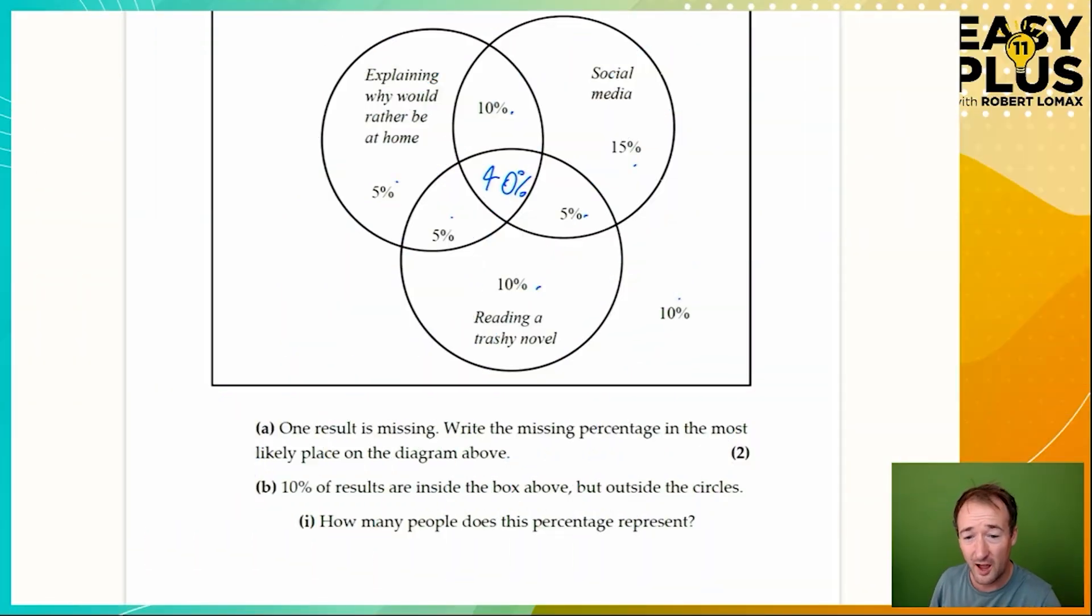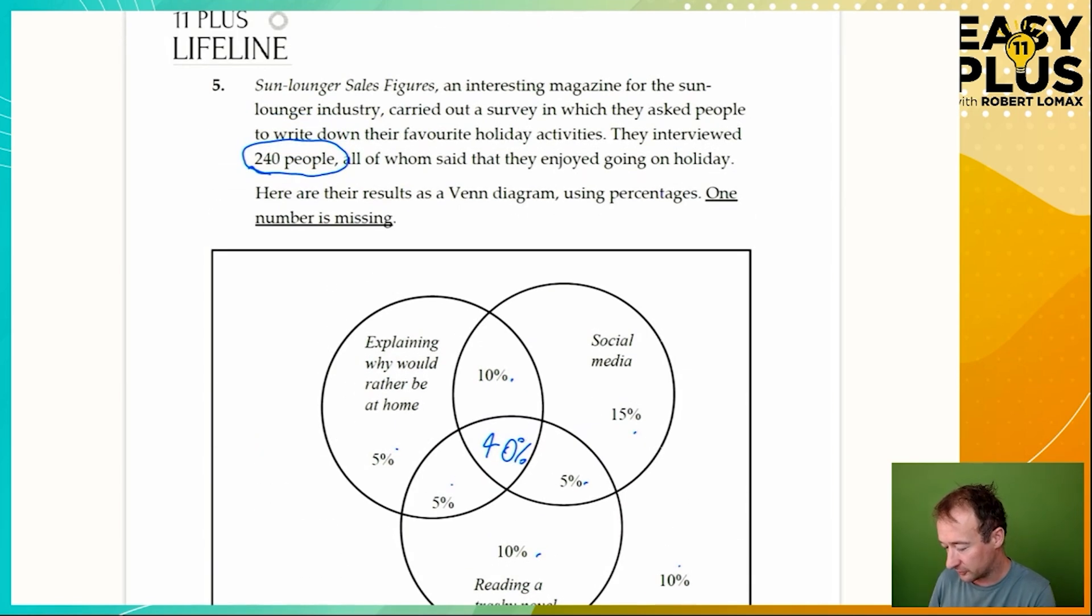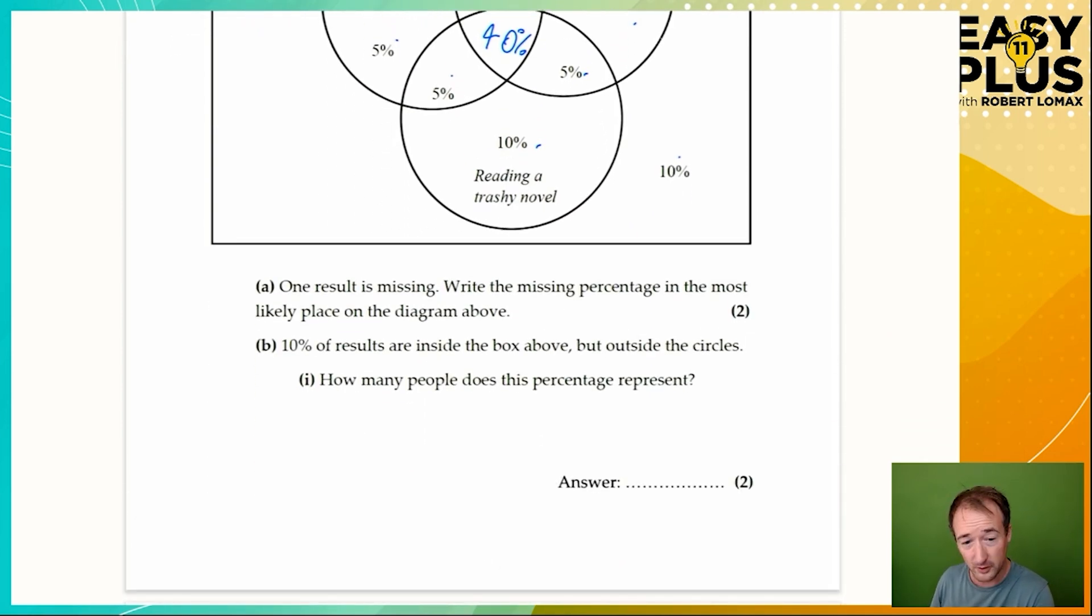Question B: 10% of results are inside the box above but outside the circles. How many people does this percentage represent? We've been dealing with percentages, now we need to go back to people. 240 people were interviewed, so what's 10% of 240? We don't really need to do any calculations here. You divide by 10 by taking off the zero at the end, so that's going to be 24. So the answer is 24 people.